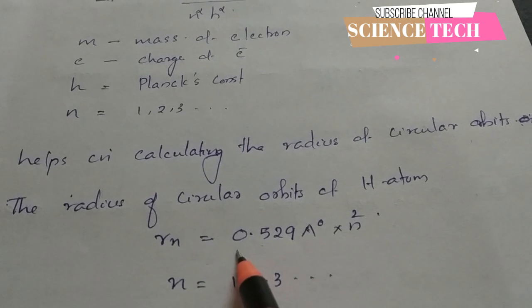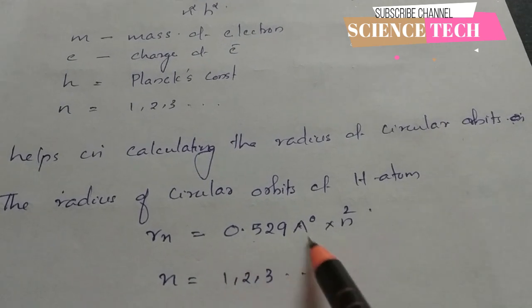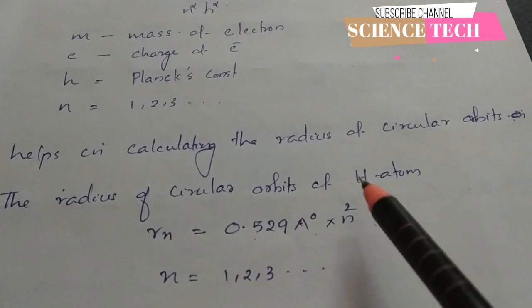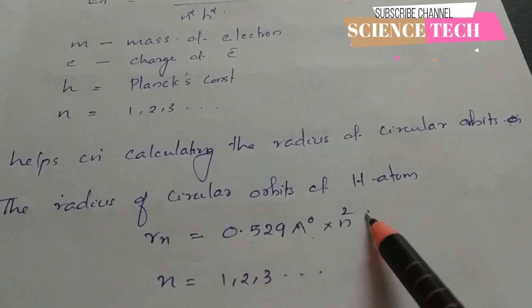The radius formula is Rn equals 0.529 Angstrom into n squared, where n equals 1, 2, 3, etc.